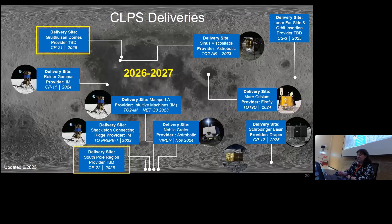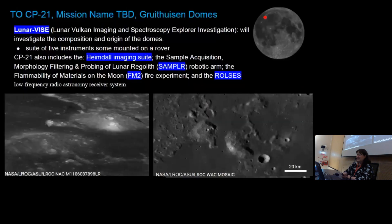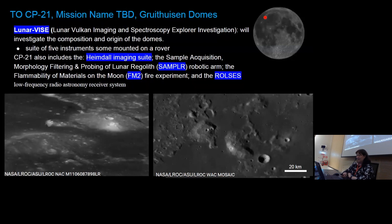CP21, which doesn't have a mission name yet as vendors haven't proposed or been selected, is Lunar Vice. The overarching goal is to investigate the composition and origin of the domes. Also on this lander: the Heimdall imaging suite, a technology demonstration of a robotic arm, and the low-frequency radio astronomy receiver system that's also flying on Intuitive Machines Mission 1.